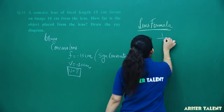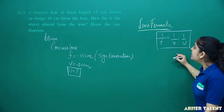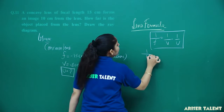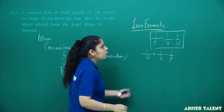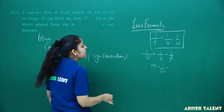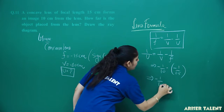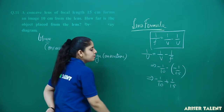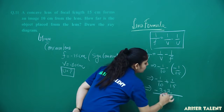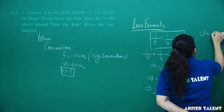The lens formula is 1/F = 1/V − 1/U. Here V is minus 10 and F is minus 15. Rearranging, 1/U = 1/V − 1/F = −1/10 − (−1/15) = −1/10 + 1/15. Taking LCM of 10 and 15, which is 30, we get −3 + 2 = −1/30. So U = minus 30 centimeter.